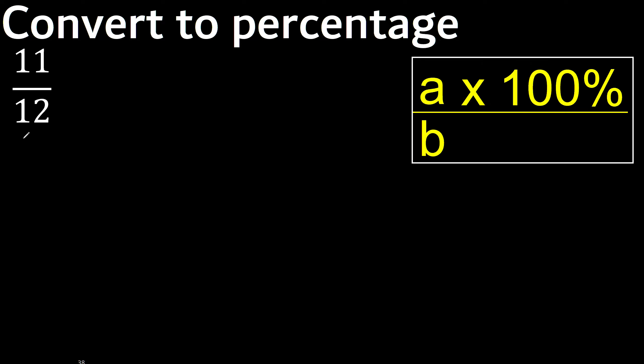Multiply by one hundred. Eleven multiplied by one hundred is divided by twelve.